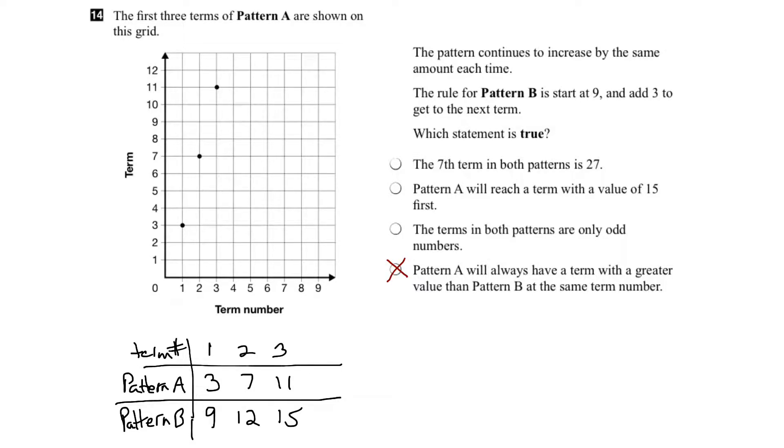Let's look at another statement: the terms in both patterns are only odd numbers. We can see here that we've got an even number for Pattern B, term number 2 is 12. So right away, we know that one is false.